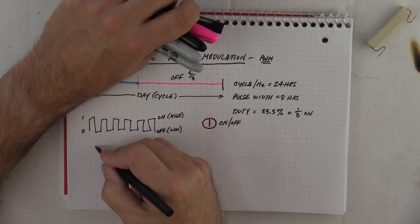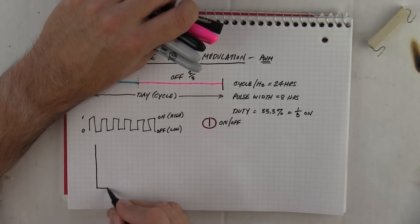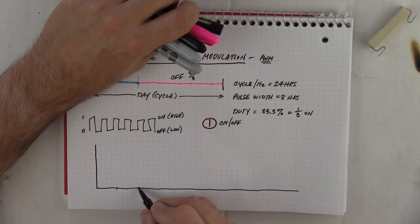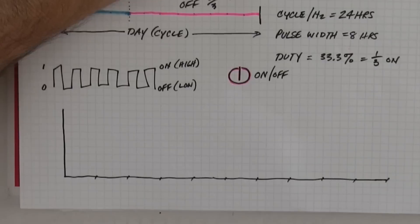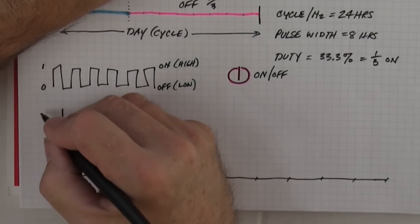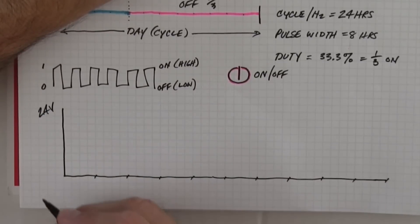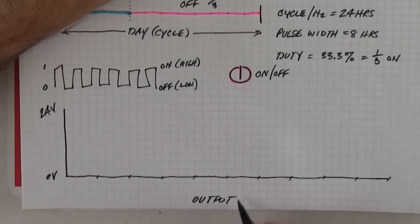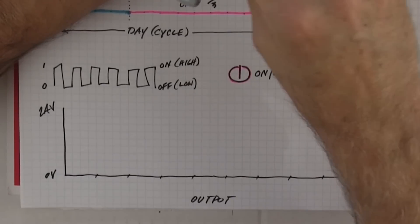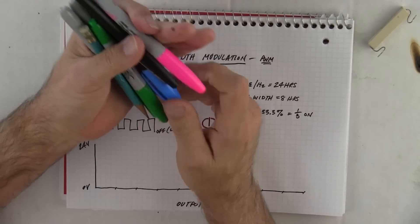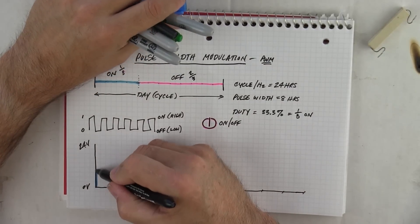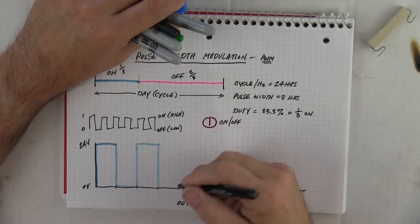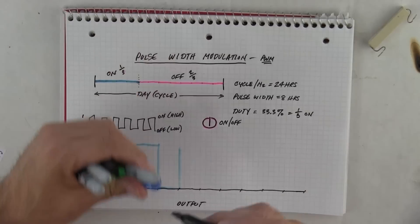Let me put a graph up here. Let's say this is a 24-volt system and the computer is sending an output pulse. Let's say the computer is sending a 50/50 pulse.